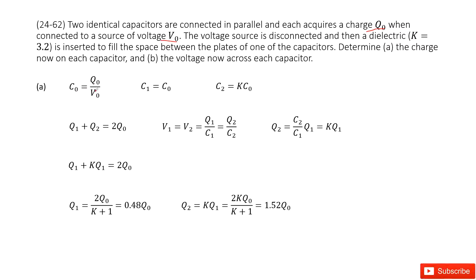Now it tells us when the voltage source is disconnected. In this case, it's disconnected, so these two capacitors are in parallel. So now these two capacitors are connected with each other, and one of the capacitors is inserted with a dielectric K.